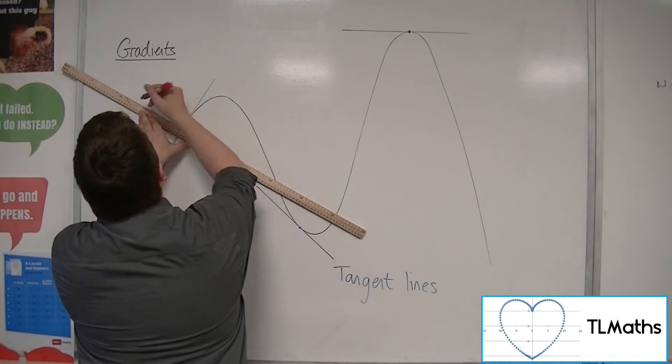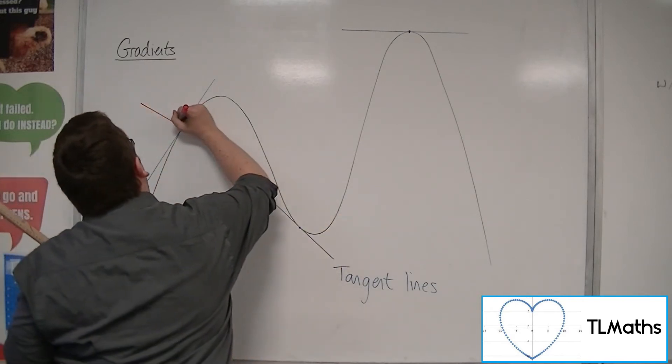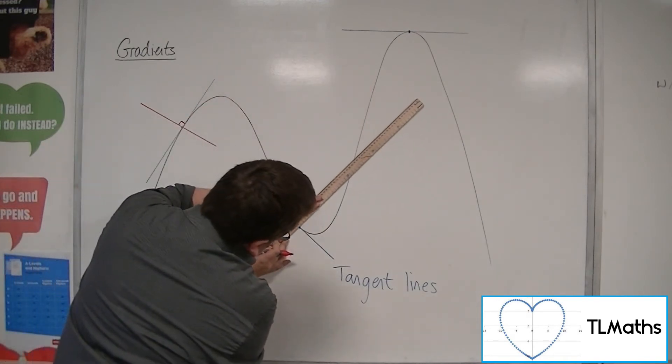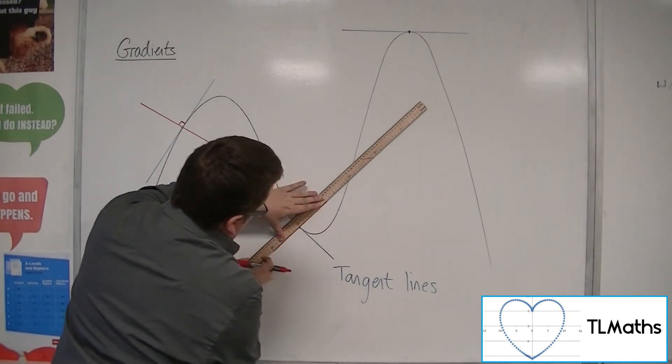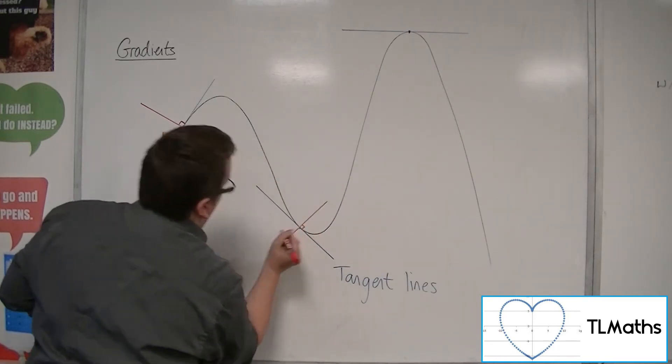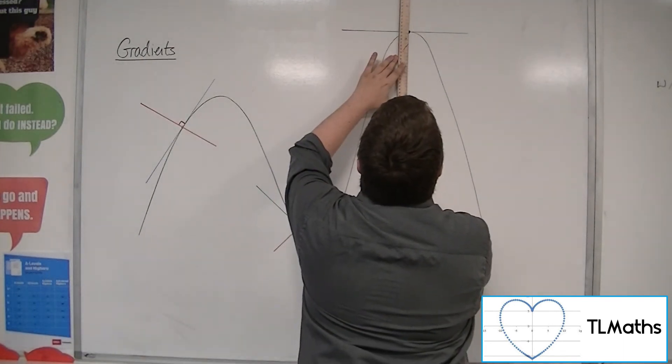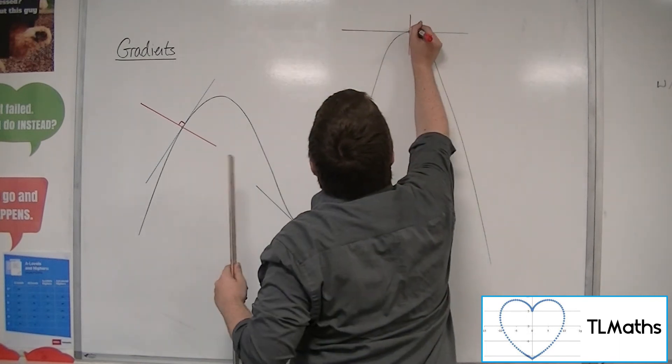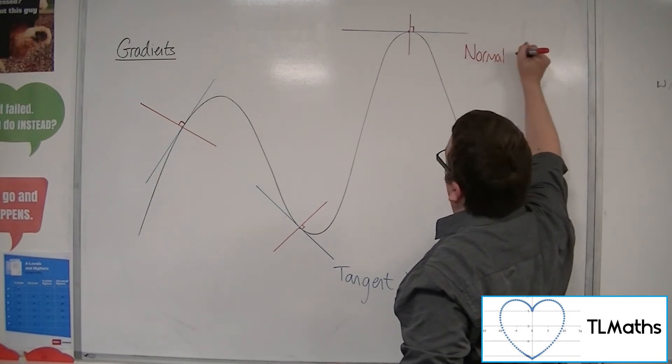So likewise here. Or up here. Okay. These would all be called normal lines to the curve.